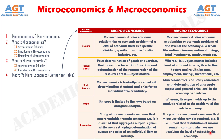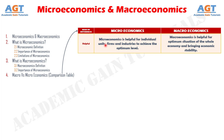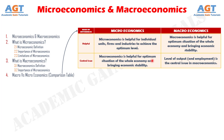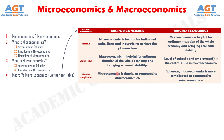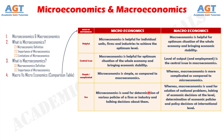Number six: Microeconomics is helpful for individual units, firms and industries to achieve the optimum level. Whereas macroeconomics is helpful for the optimum situation of the whole economy and bringing economic stability. Number eight: Microeconomics is simple as compared to macroeconomics. Whereas macroeconomics is more complicated as compared to microeconomics. Number nine: Microeconomics is used for determination of various policies of a firm or industry and taking decisions about them. Whereas macroeconomics is used for solution of national problems, taking economic decisions at the national level, determination of economic policies and policy decisions at the international level.